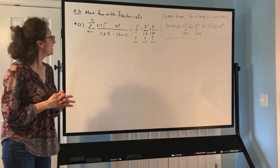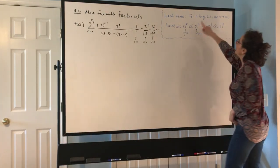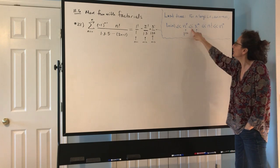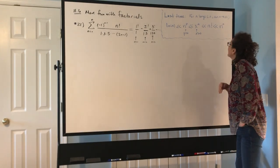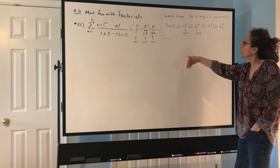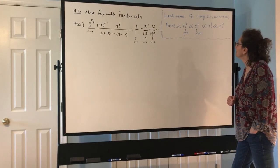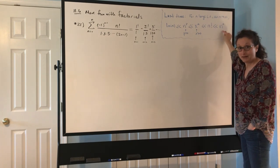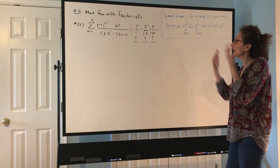We're going to finish up our 11.6 work with some fun with factorials and then our long-awaited proof of the ratio test. First, let's recall from last time: for large n going to infinity, we had this dominance hierarchy. Logarithms are dominated by power functions, which are dominated by exponential functions, which are dominated by factorials, which are dominated by n^n — the fastest growing of them all.